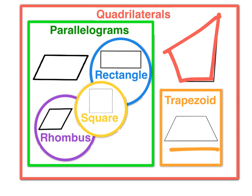Rectangles have two parallel opposite sides and four 90-degree angles. Rhombuses have two parallel opposite sides but the lengths of each side are the same. So when you put those attributes together, you get a square — because the square has four equal sides like a rhombus, four 90-degree angles like a rectangle, and like all parallelograms, two pairs of opposite sides that are parallel to each other.